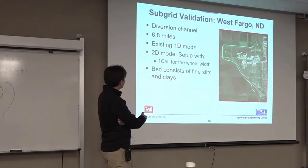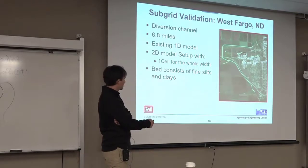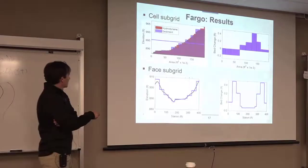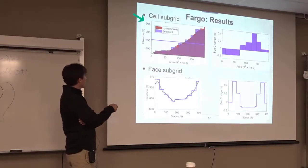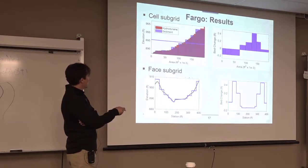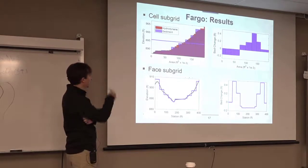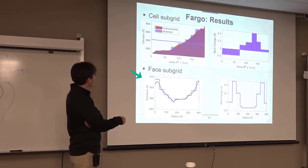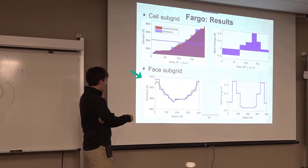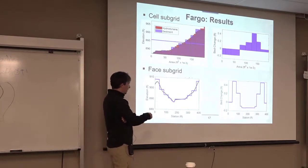The diversion channel is 6.8 miles. I mentioned there's a 1D existing model. I set up the 2D model with just one cell across, so it's a very small mesh, and it's fine silt and clays. This shows the area elevation curves for hydraulics, which are in red, and the sediment is on top. Those are the blue ones, and this horizontal line is the water level. And so as it animates on the next slide, you'll see it go up and down. And this is for a face. You have just kind of the profile of the terrain.